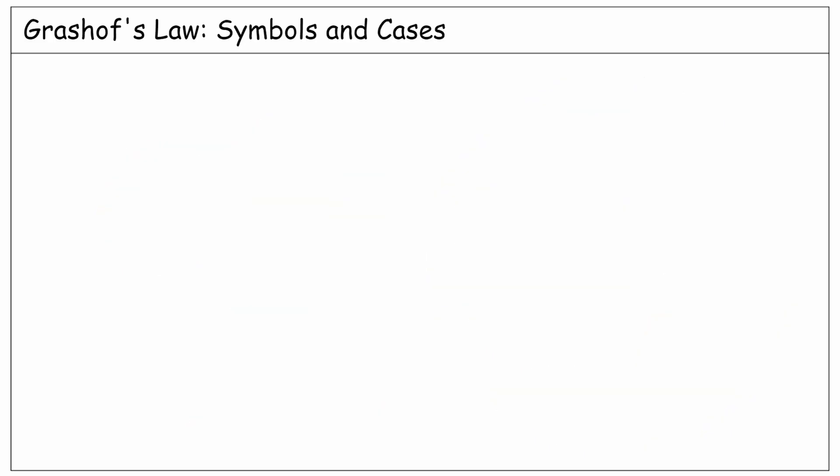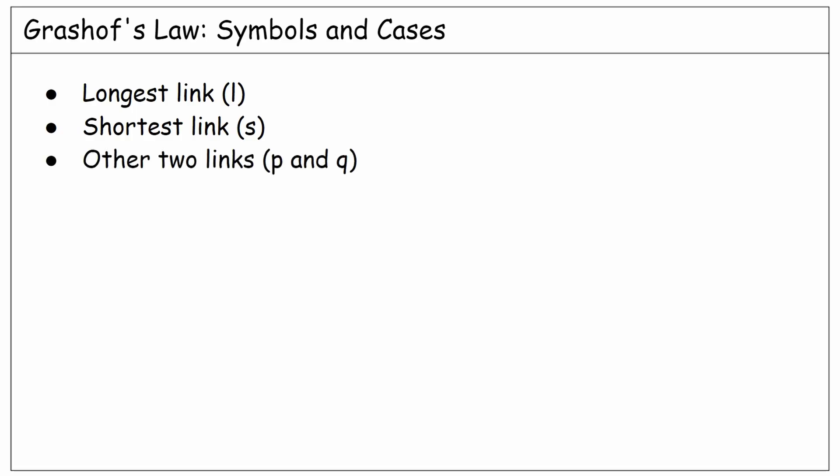Before we start, let's define some symbols to ease talking about different cases of these criteria. Among the four different lengths of a 4-bar linkage, we name the longest link L, the shortest link S, and for the other two links, we use P and Q. Now, with these symbols, let's talk about different cases of Grashof's law.